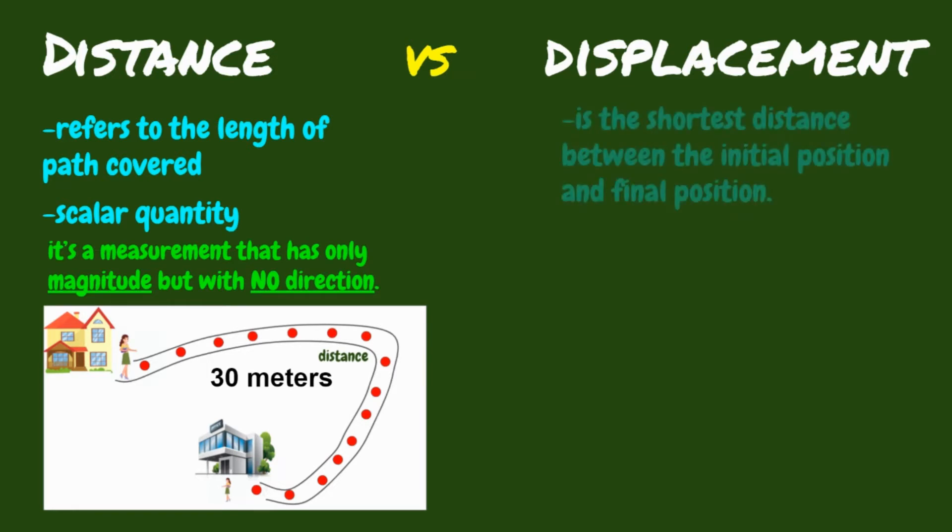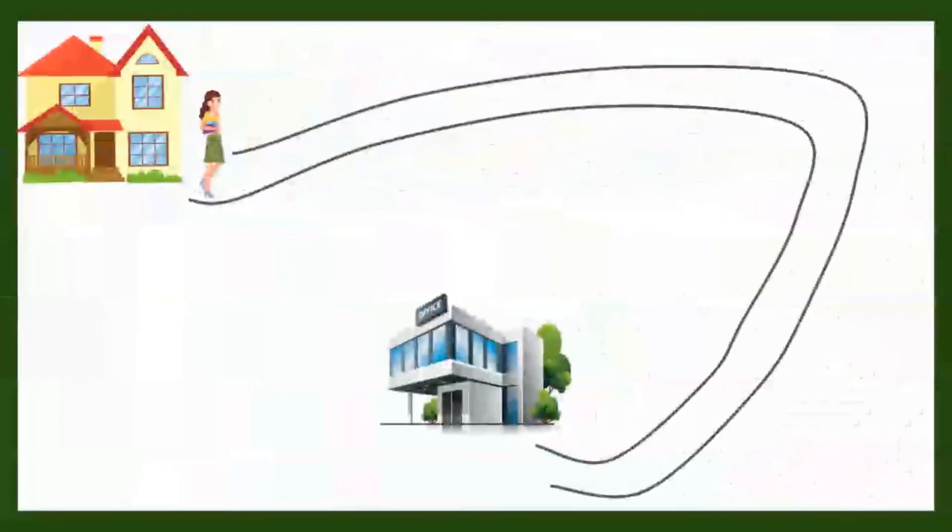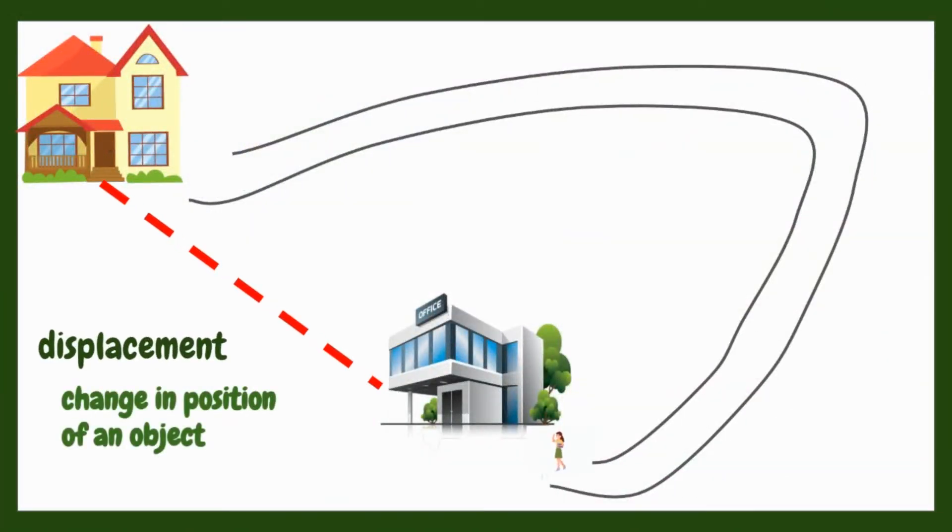The displacement is the shortest distance between the initial position and final position. Displacement is said to be a vector quantity, which means it's a measurement that has magnitude and direction. The displacement is defined as the change in position of an object. Another definition of displacement is it is the shortest distance between the initial position and final position.